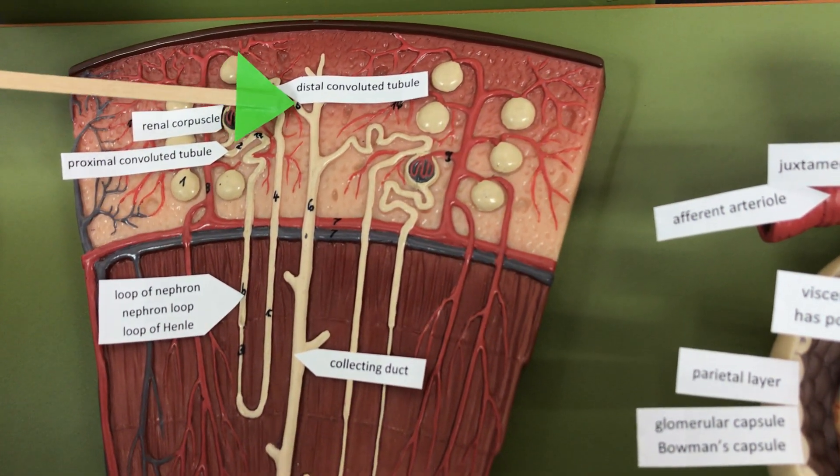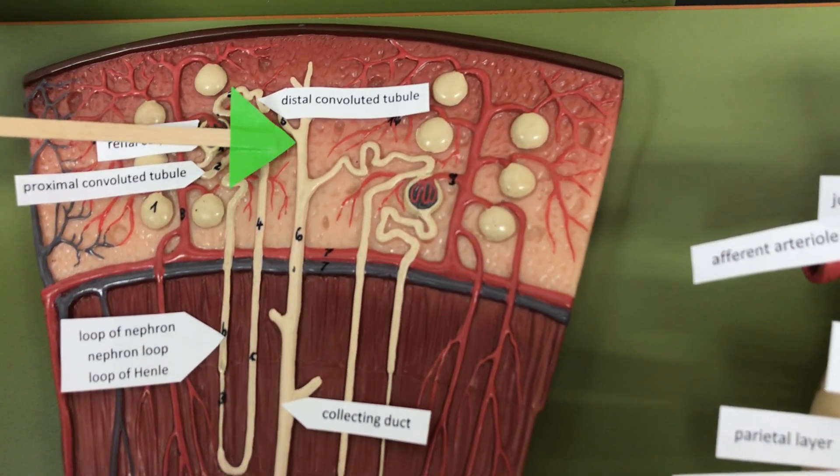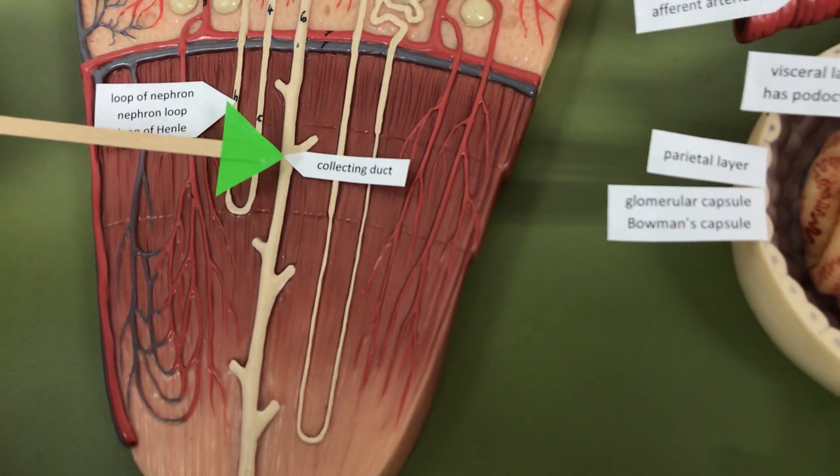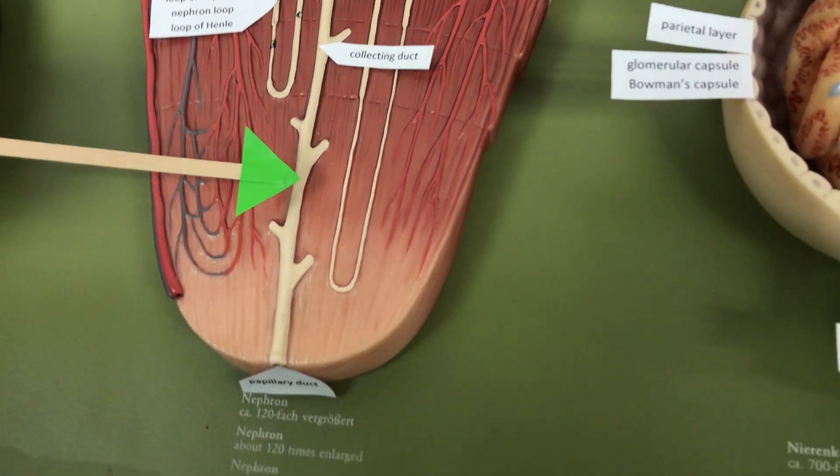After the distal convoluted tubule, whatever is left is going to go into the collecting duct. We can still pull stuff from the collecting duct if needed.